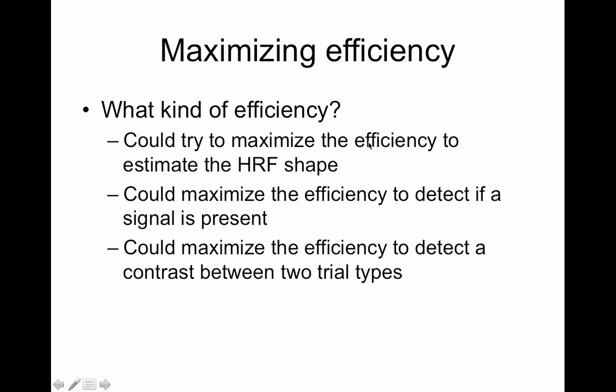There are smarter ways to go about it. And I'll talk about that in probably the fourth efficiency lecture. Of course, make sure you're maximizing the correct efficiency. So if you're trying to estimate the HRF shape, that means you want to maximize efficiency for HRF estimation. Or you could maximize efficiency for detection, which would go along with a convolved regressor. This would have something to do with the FIR model. Or you could maximize the efficiency to detect a contrast between two trial types, which would probably be using HRF convolution, but a different type of contrast. So you just have to figure out which of these you're interested in.